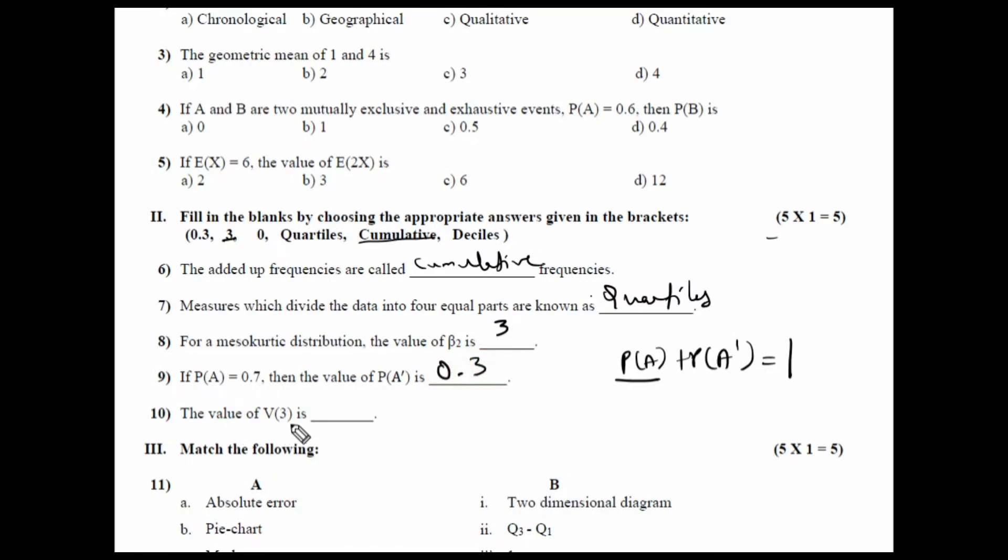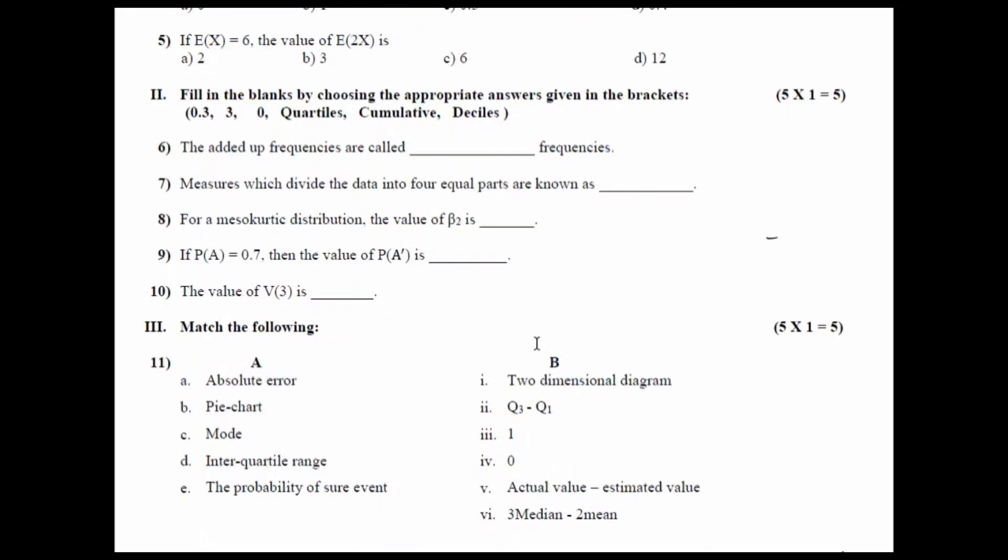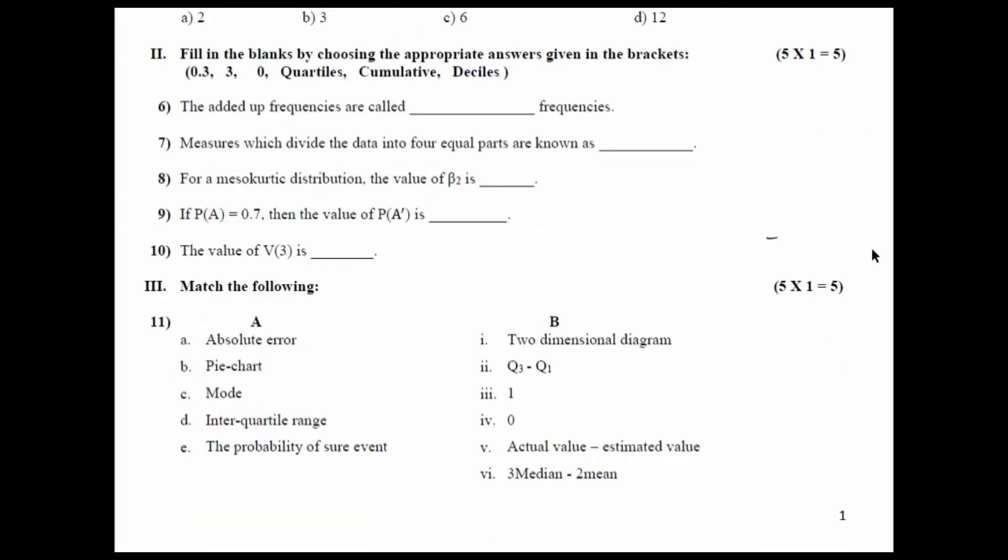What is the value of variance of 3? Variance of a constant is equal to 0. Therefore, variance of 3, the answer is 0. So, these are the respective answers for the fill in the blanks. You can rewind the video and repeat them once again. Now, the next part here is match the following.